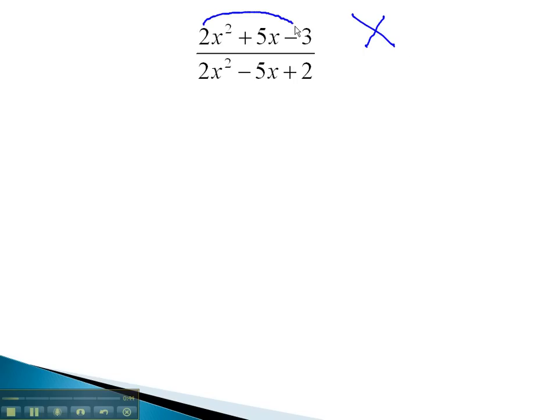In the numerator, using the ac method, we need to multiply to negative 6 and add to 5. This is possible with 6 and 1, if the 1 is negative. We can start building our factors then. The only way to get 2x squared is 2x times x. We had to factor a 2 out of one of our numbers. Clearly, the 2 can factor out of the 6, giving us a positive 3. Factoring the x out of negative 1x leaves us just negative 1, and the numerator is factored.